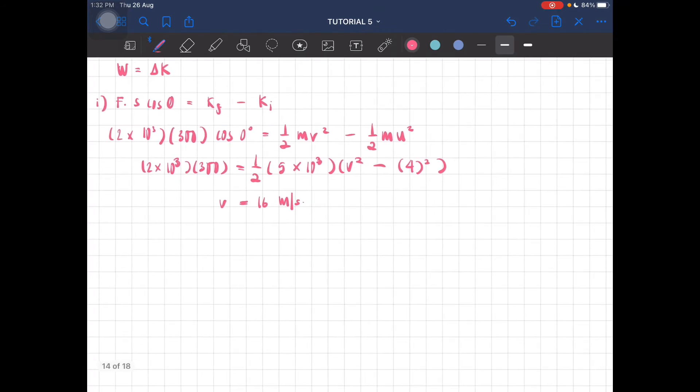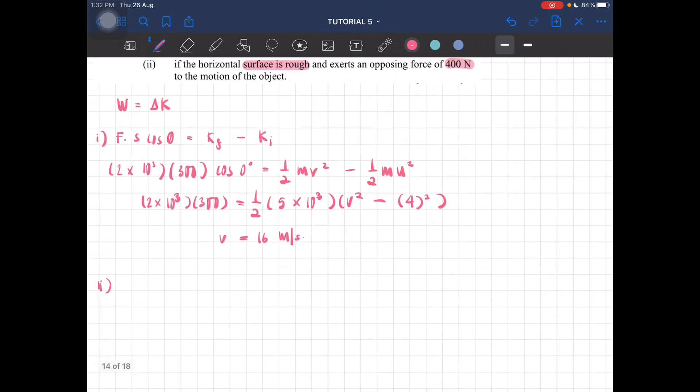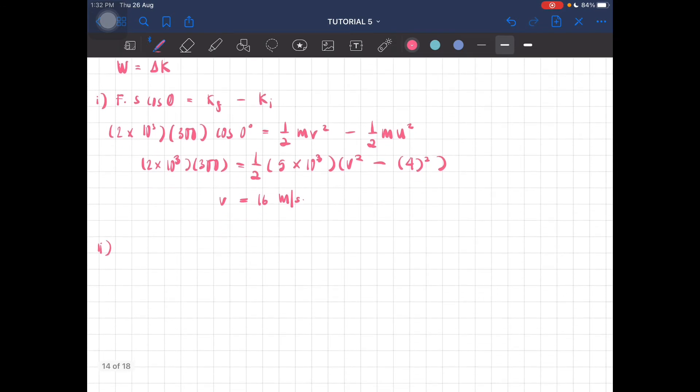Now we look at part two. If the horizontal surface is rough - since the block is initially moving and in the first case the surface was smooth with no frictional force, in this situation the surface is rough so there is an opposing force.